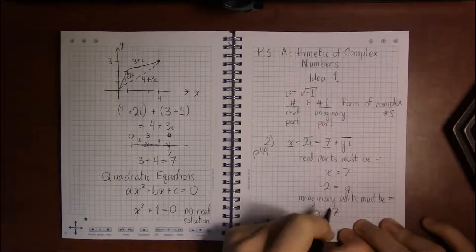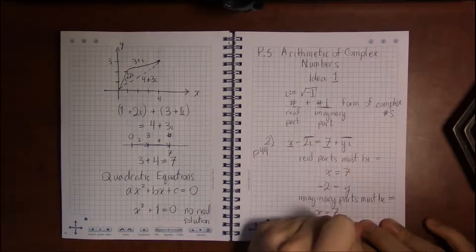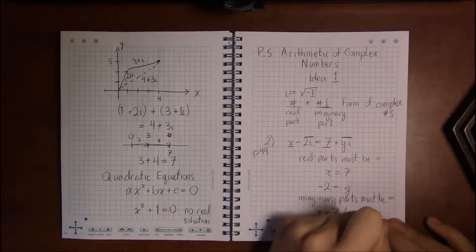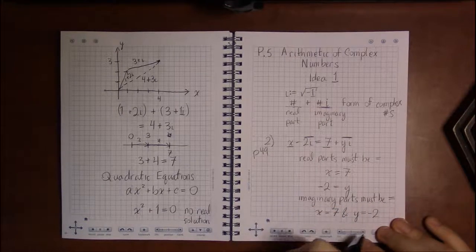In order for complex numbers to be equal, x has to be 7 and y has to be equal to minus 2.